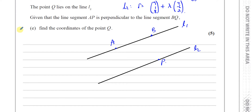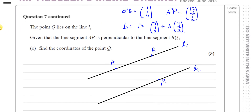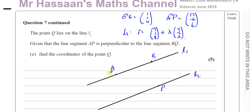We already know those details from the earlier parts — we know the vector from O to B, from A to P, the vector from O to P, the equation of line 2, and the equation of line 1. I've written some of those things down that we might need here. Now, the point Q lies on line 2.